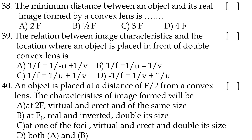Thirty-eighth question: the minimum distance between an object and its real image formed by a convex lens is option D, 4f. Thirty-ninth question: the relation between image characteristics and object location in front of a double convex lens — option A, the lens equation: 1/f = −1/u + 1/v. Fortieth question: an object placed at a distance of f/2 from a convex lens — option C, image is virtual, erect, and double its size.